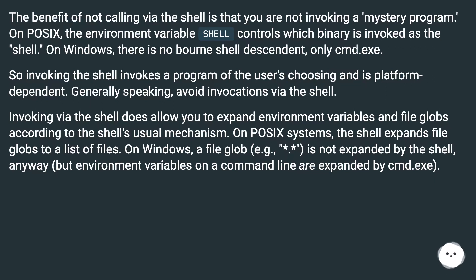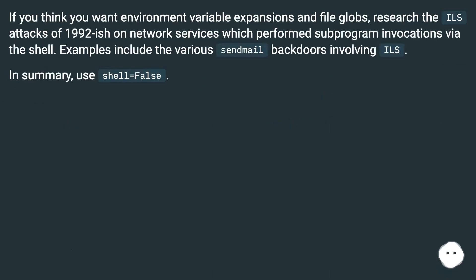Invoking via the shell does allow you to expand environment variables and file globs according to the shell's usual mechanism. On POSIX systems, the shell expands file globs to a list of files. On Windows, a file glob — e.g., star dot asterisk — is not expanded by the shell anyway, but environment variables on a command line are expanded by cmd.exe. If you think you want environment variable expansions and file globs, research the ILS attacks of 1992-ish on network services which perform subprogram invocations via the shell. Examples include the various sendmail backdoors involving ILS. In summary, use shell equals false.